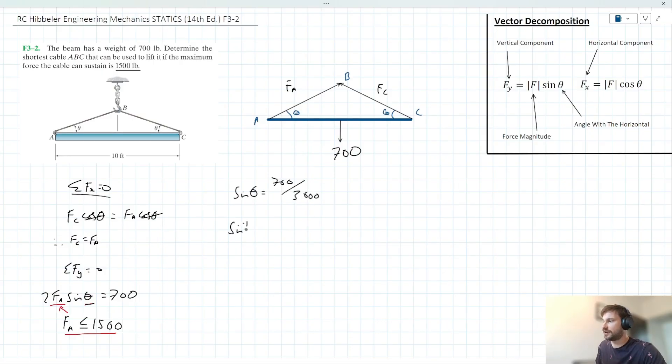We can then take the inverse sine of both sides. We can say then that theta is equal to the inverse sine of 700 over 3,000. Now when we plug this in our calculator, this gives us an angle of 13.5 degrees. So we now know that theta is equal to 13.5 degrees.